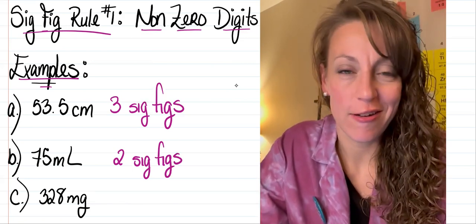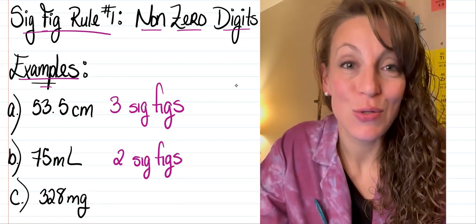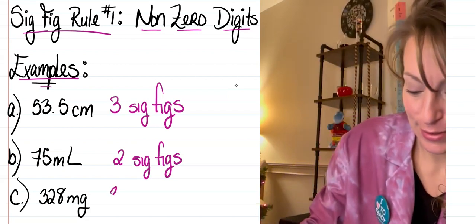In letter C, I have 328 milligrams. So now I've got three sig figs once again.